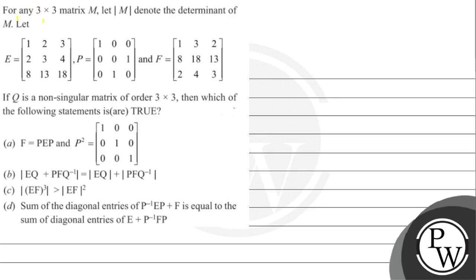Hello, let's read the question. We are given three matrices. Matrix E is 1, 2, 3; 2, 3, 4; 8, 13, 18. Matrix P is 1, 0, 0; 0, 1, 0; 1, 0, 1. And matrix F is 1, 3, 2; 8, 18, 13; 2, 4, 3. It is a non-singular matrix of order three.